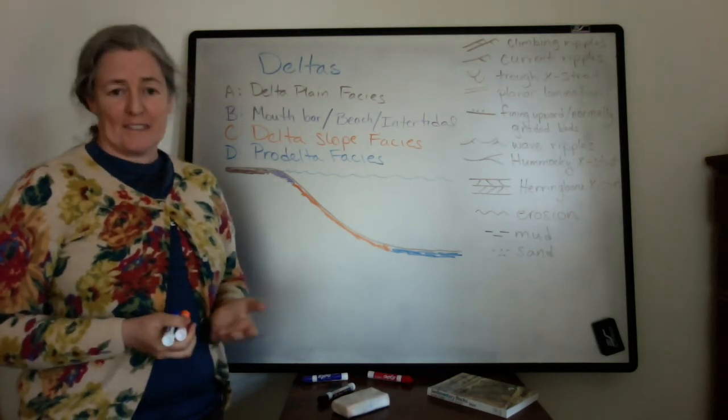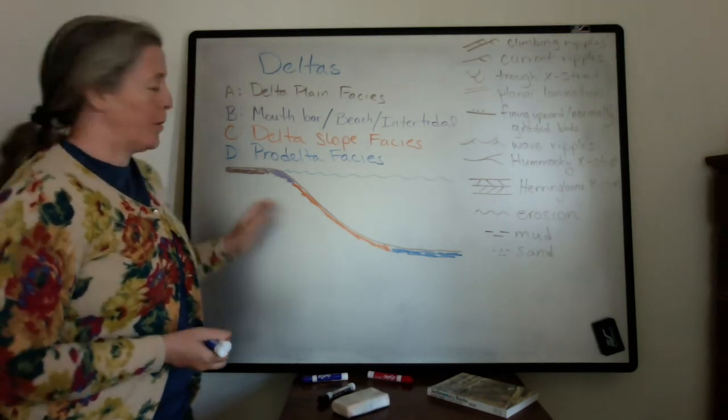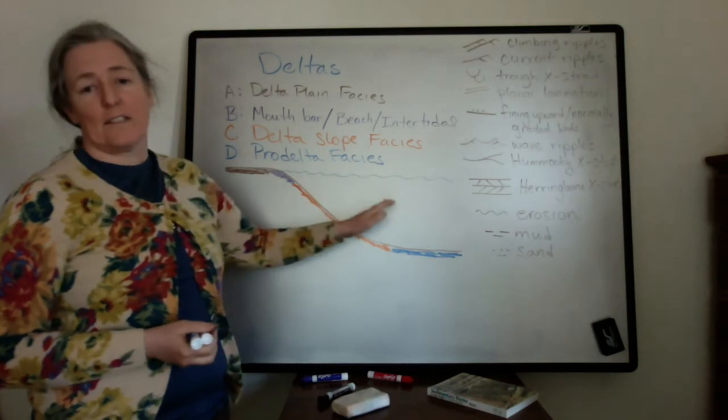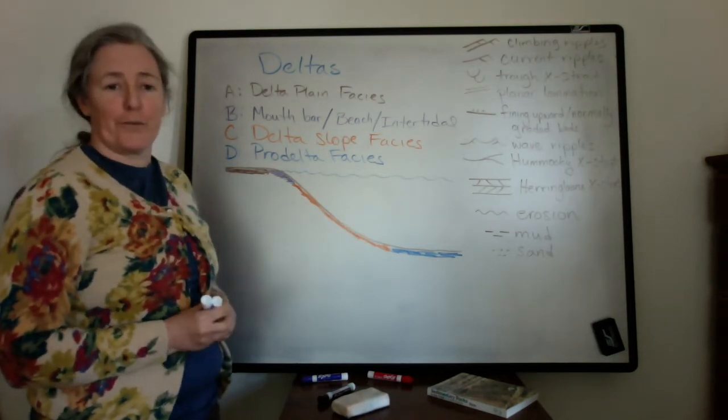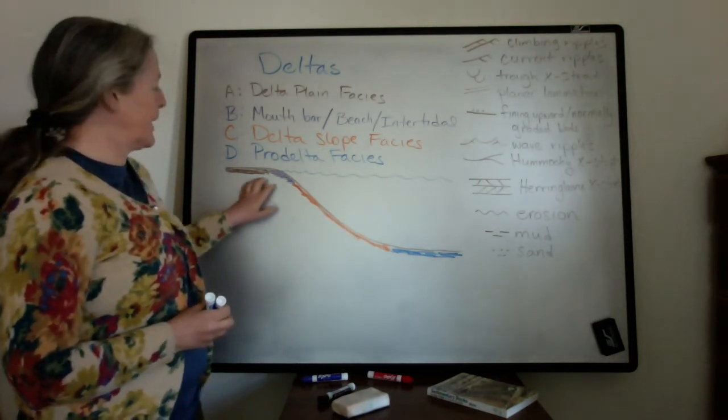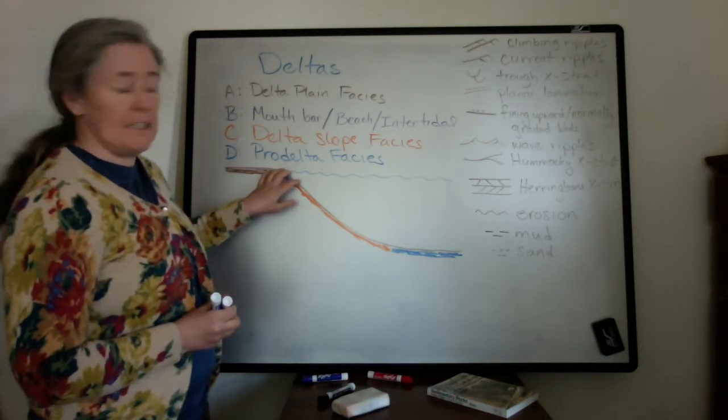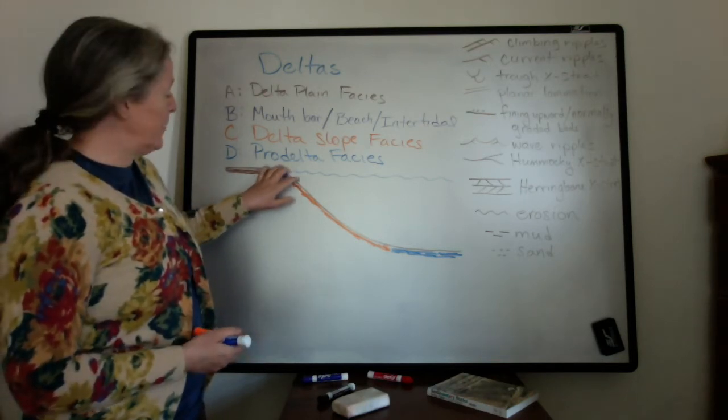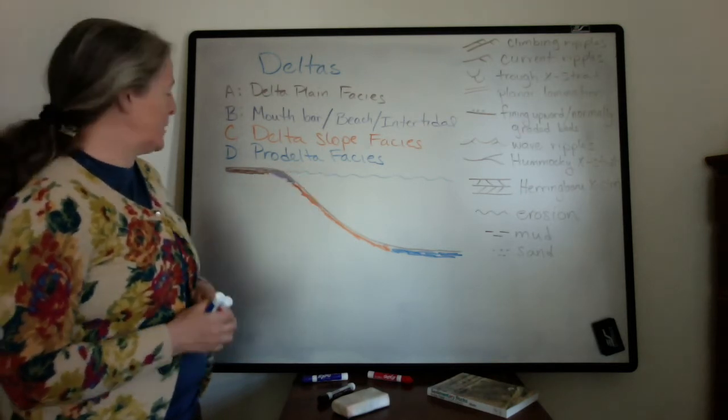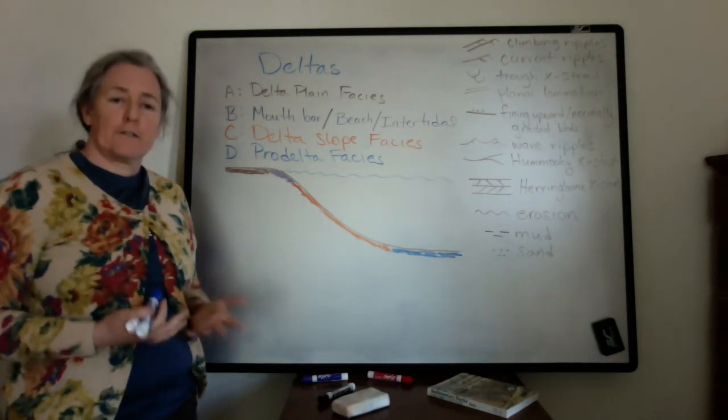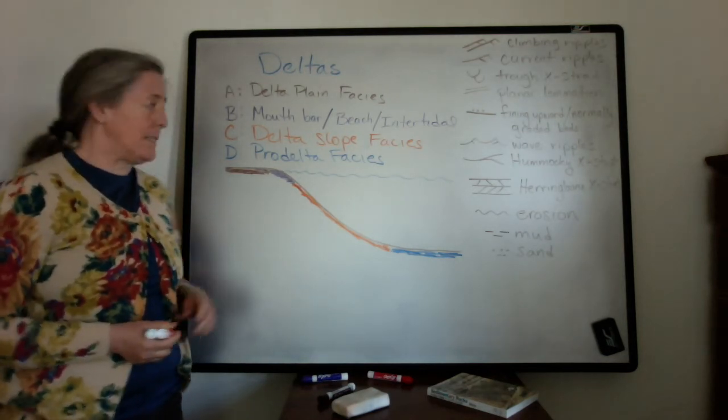One of the characteristics of deltas is that they prograde or advance into the standing body of water through time. The rivers are bringing in sediment and there's enough sediment for the delta to build outward, and so that creates a characteristic distribution of facies.